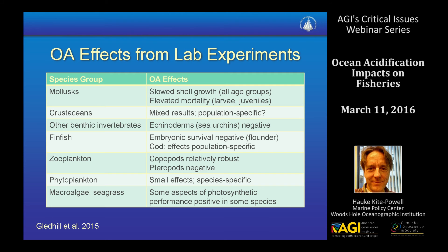This is a summary of results from lab experiments on the effect of lower pH conditions on a variety of marine species, from a paper by Gledhill and colleagues. It's similar to some of the results that John presented. Again, it's the calcifying organisms, the mollusks in particular, that show the most clear pattern of negative effects. For other species, the effects are less severe or unclear. An important point is that people notice differences in subpopulations in the way they respond to lower pH conditions, and that may have to do with the fact that the coastal pH regime is so dynamic, and different subpopulations may adapt and evolve in different ways in response to that.